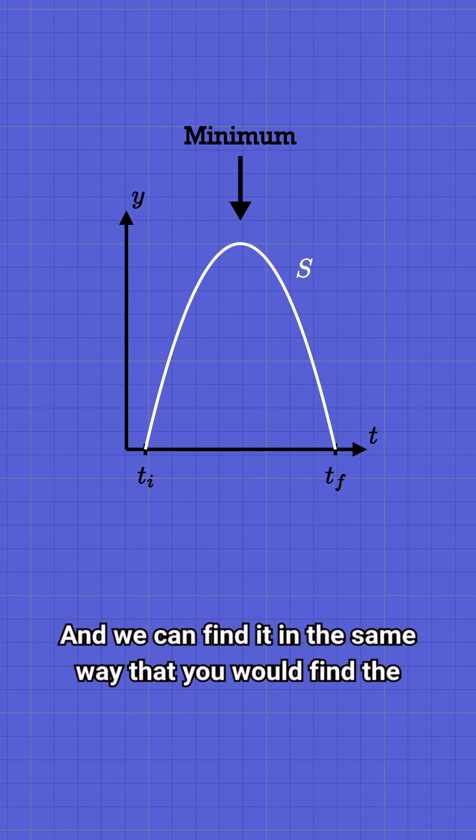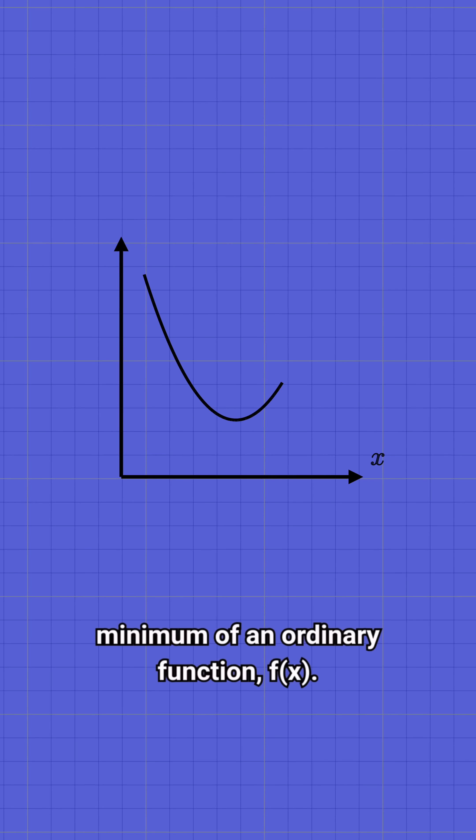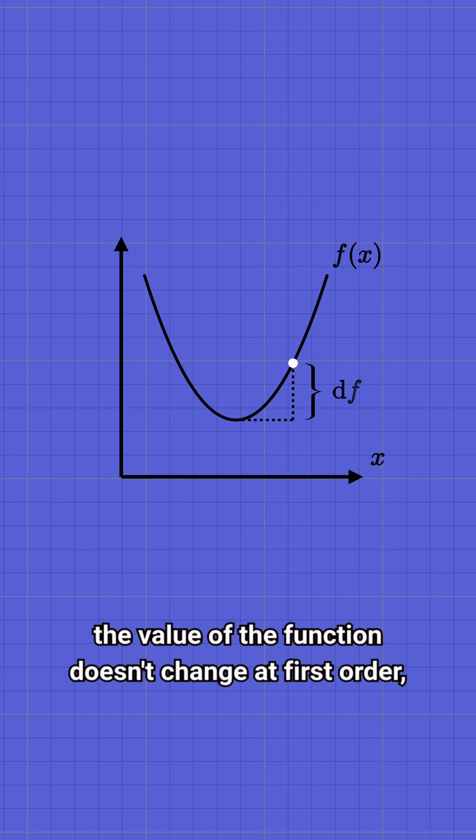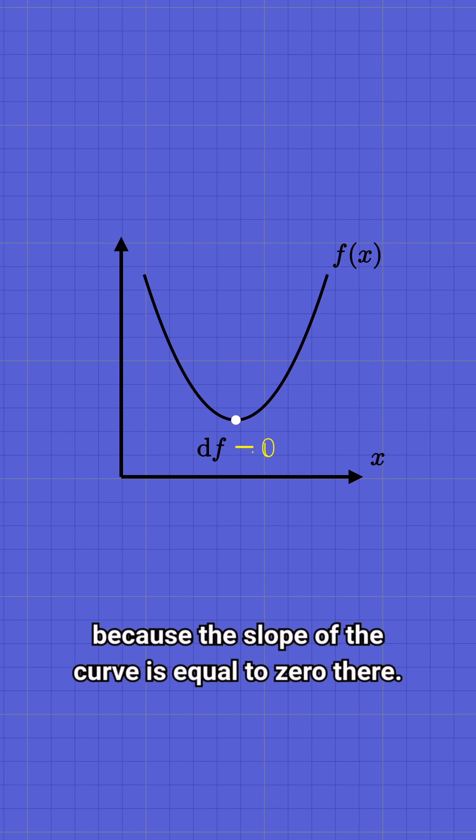We can find it in the same way that you would find the minimum of an ordinary function, f. The key property is that when you take a tiny step away from that extremal point, the value of the function doesn't change at first order, because the slope of the curve is equal to zero there.